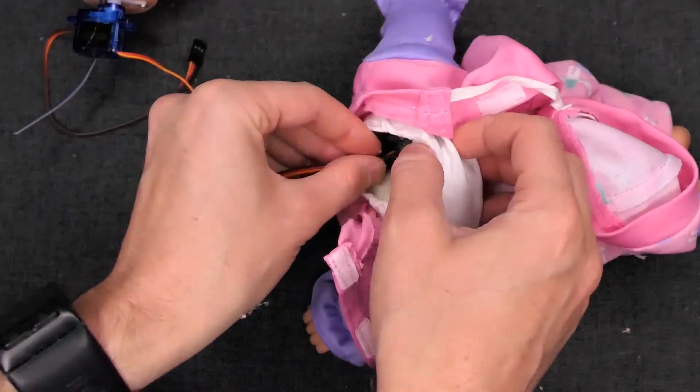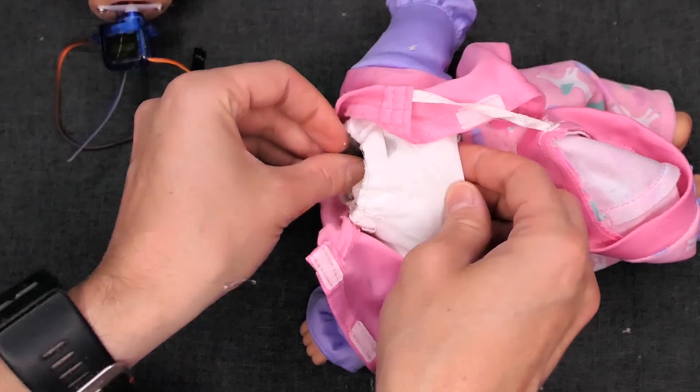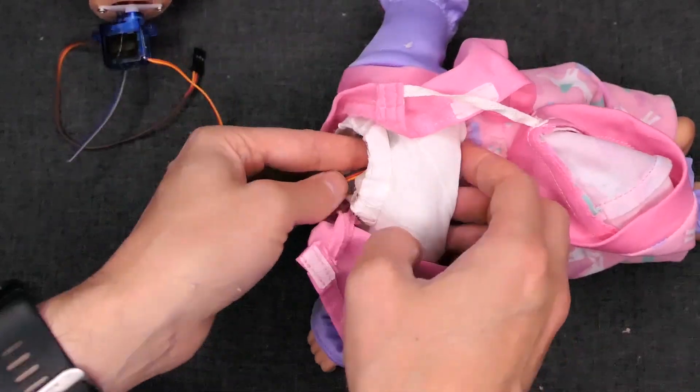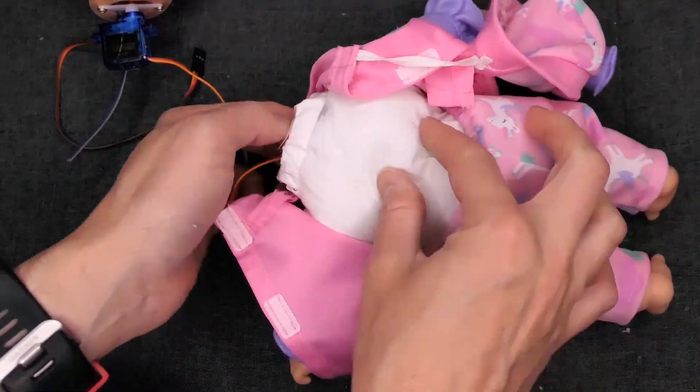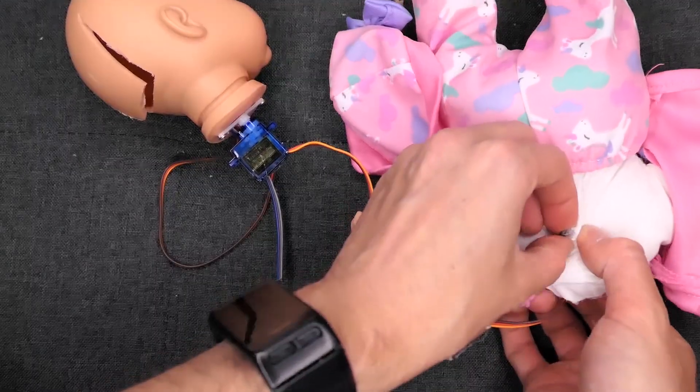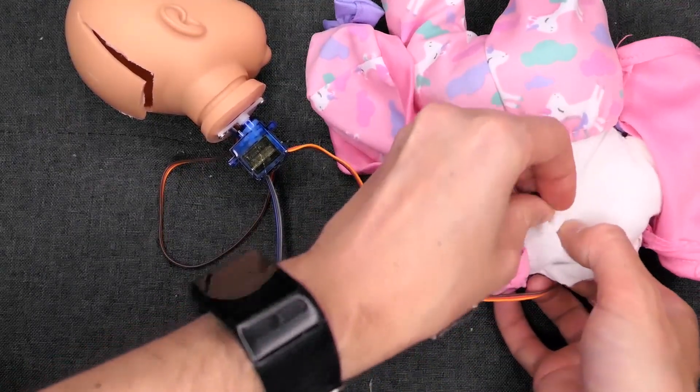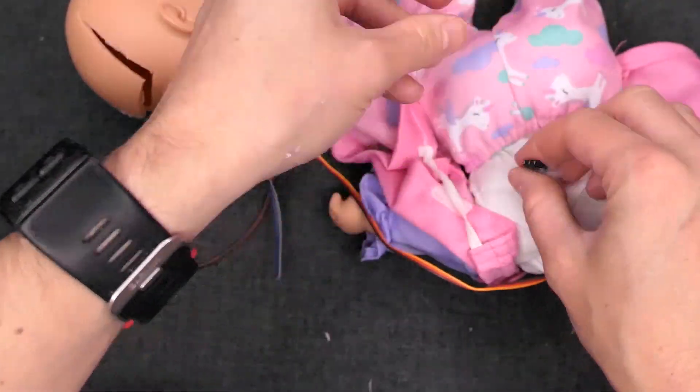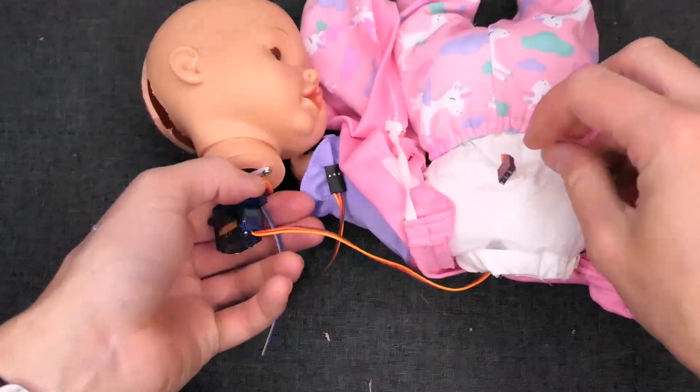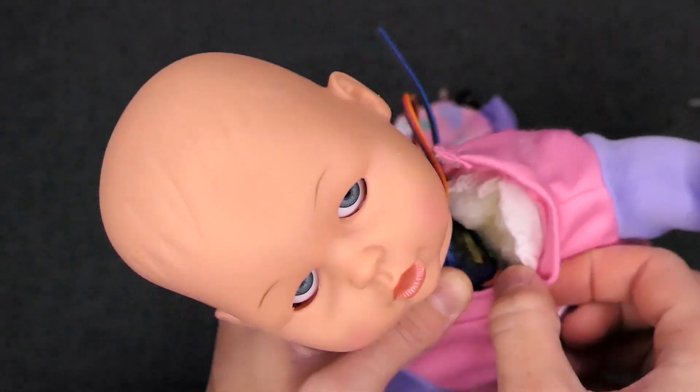Now feed the servo wire through the holder and out of the back of the doll. Place the servo within the holder and secure in place with more hot glue.